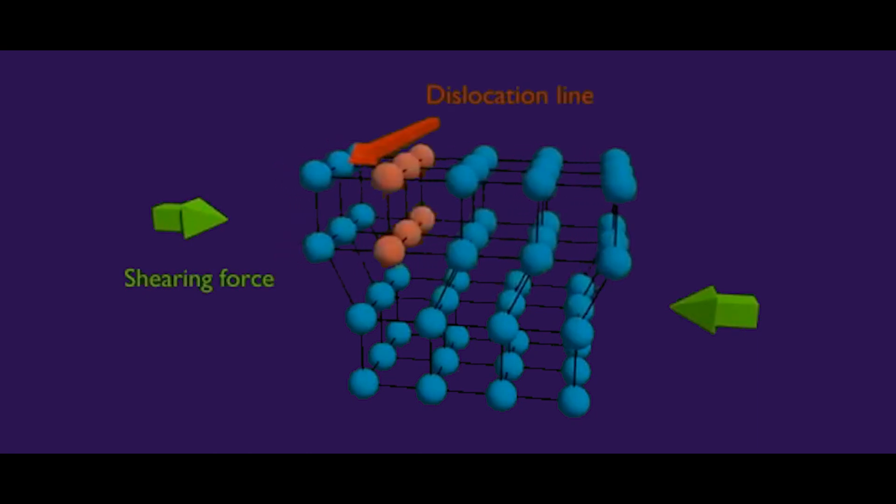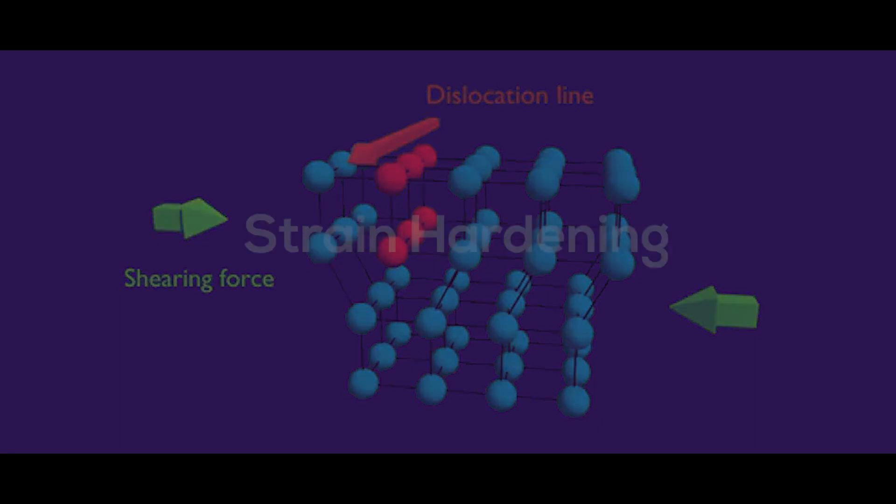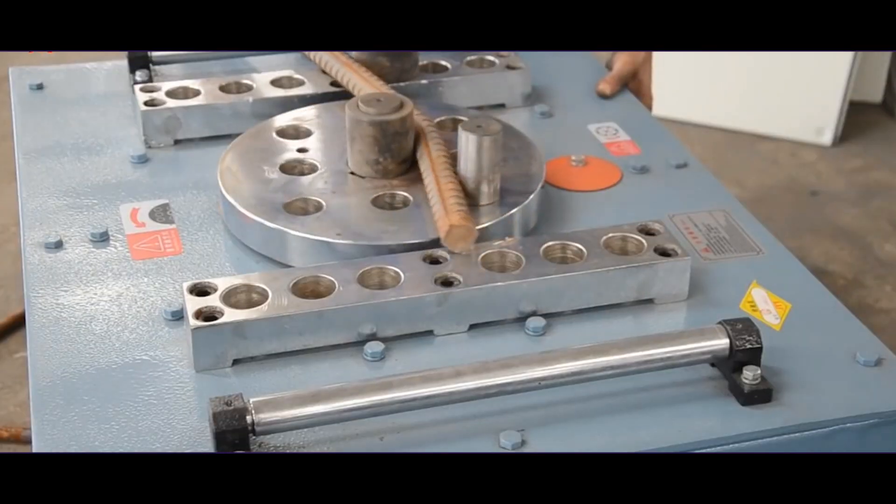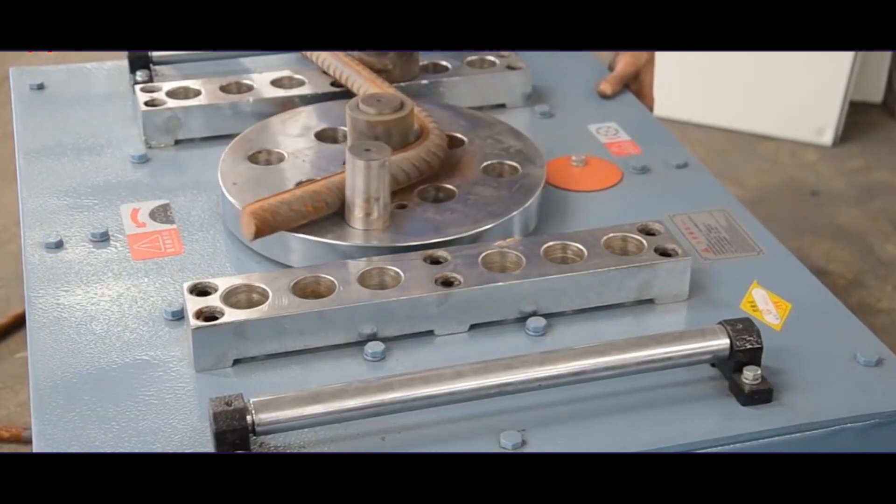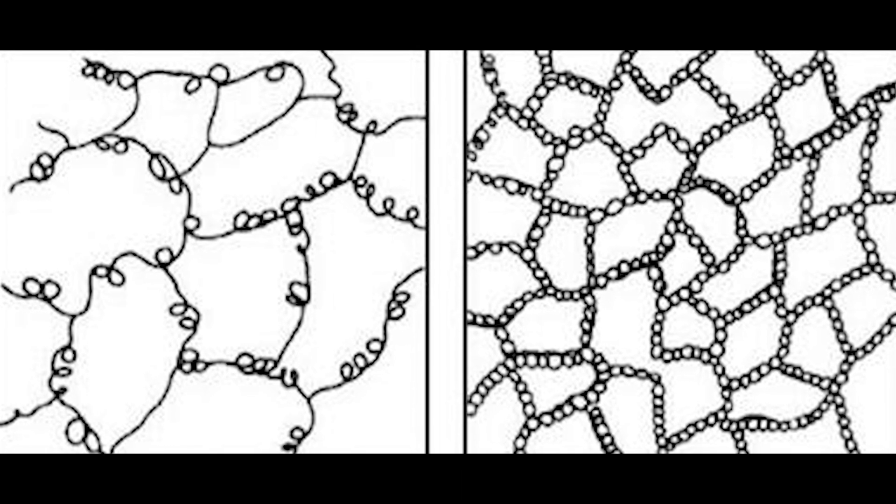There are dislocations in metal crystals which weaken it. A way around this is to impede the movement of these dislocations. This is done by strain hardening. Repeated deformations drive these dislocations through the metal until they form dislocation tangles and the motion is impeded.